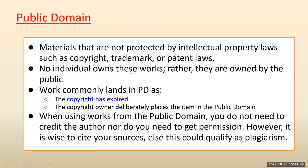When you have these different types of licenses, we have a concept called public domain. What is public domain? Materials that are not protected by intellectual properties. When you search for any image in Google, always try to search for free download versions. You can type, for example, NCRT followed by 'file type free downloads' — then you can download many images and reuse them. That is all called public domain. Public domain means you do not worry about anything — it is free. When using works from the public domain, you do not need to credit the author nor get permission — though it is wise to cite your sources, else this could classify as plagiarism.